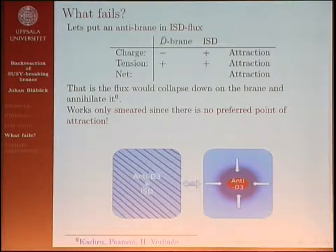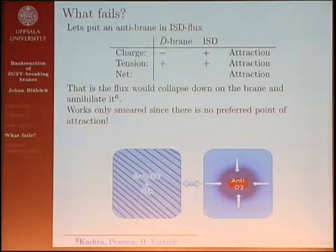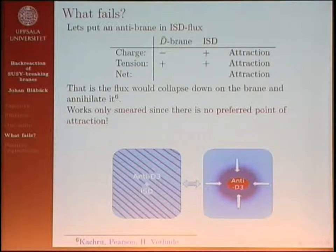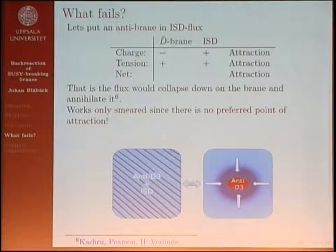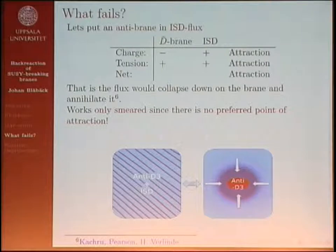Why does this fail? If we put an anti-brane in ISD flux, charge-wise they are different and attract, tension-wise they are the same and attract like masses — net attraction. In the GKP BPS setup with an O-plane instead, tension would be repulsive and there would be no net force, but the flux would collapse down on the brane and annihilate it. This also explains why only the smeared solution works: with no preferred point of attraction when the brane is everywhere, once you collect the brane to one position, the flux attracts to it and the solution fails.